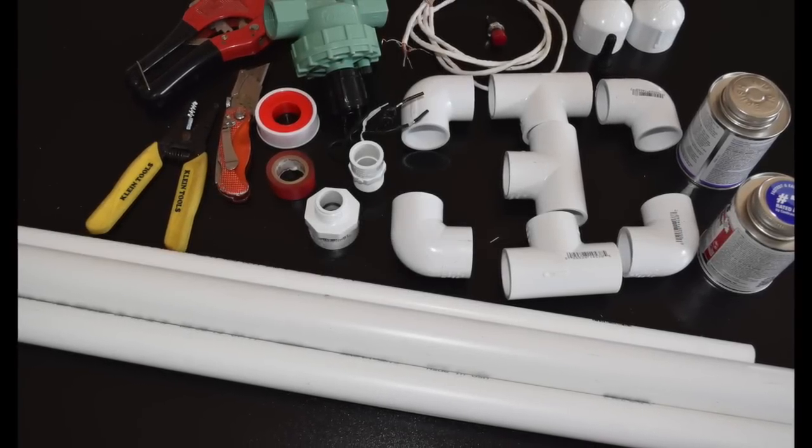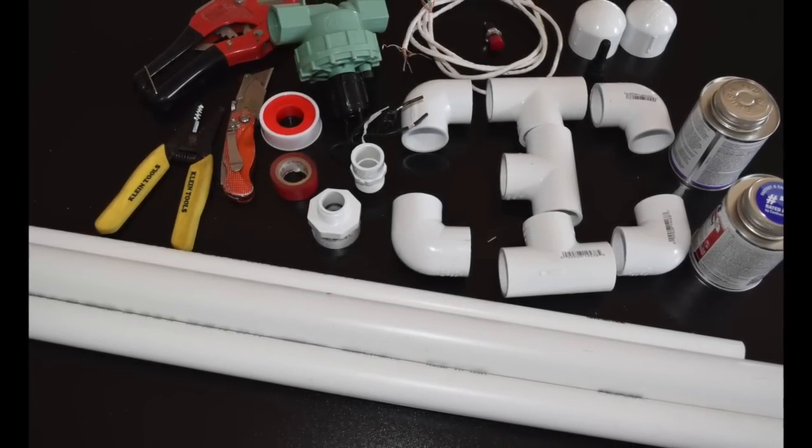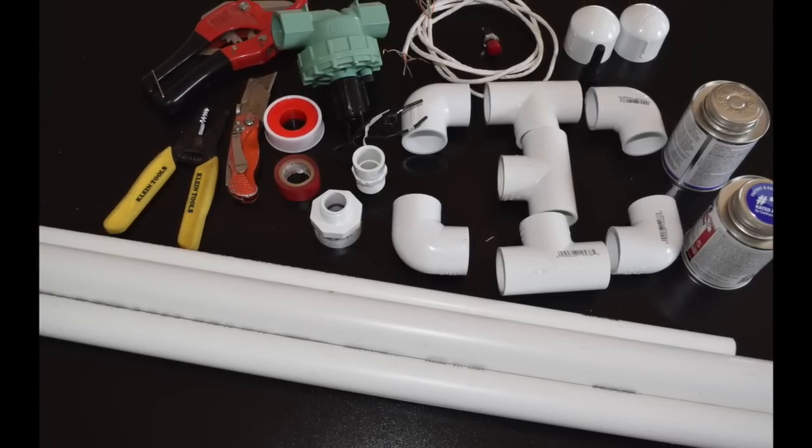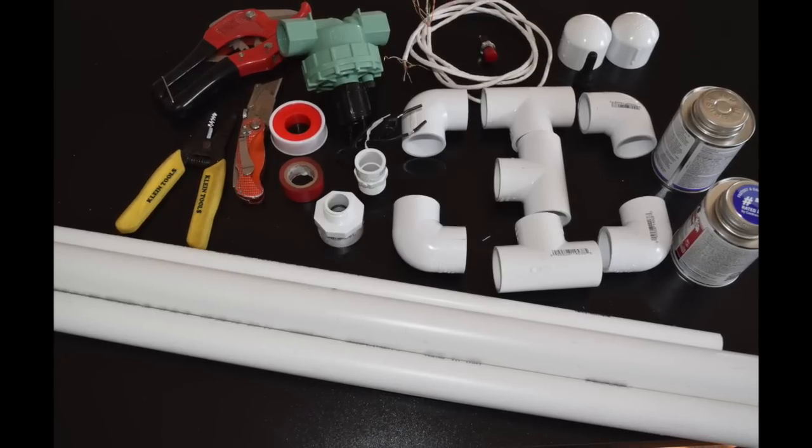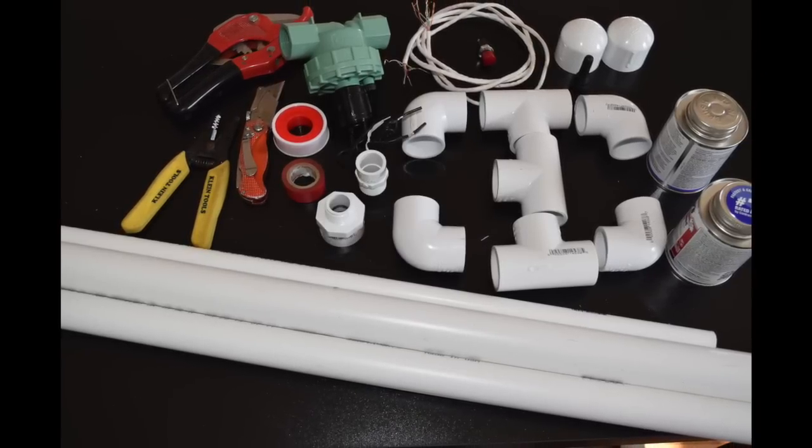They include one inch and one-half inch PVC pipe and fittings, a sprinkler valve, and an electrical switch and batteries. The full parts list will be in the comments below.